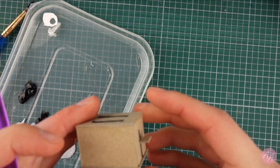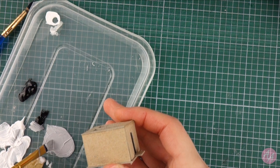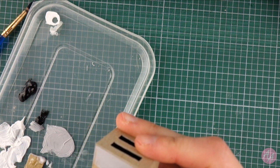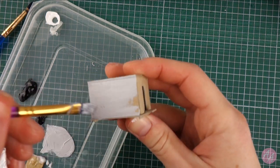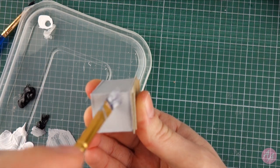With the glue dry and the toaster feeling pretty solid, I can now paint it. I'm starting with a base coat of grey and then silver on top.